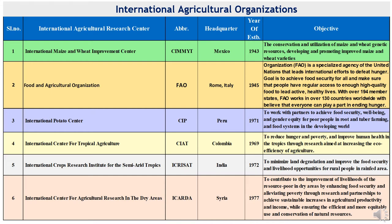Second is FAO — Food and Agriculture Organization — headquartered at Rome, Italy, established in 1945. The Food and Agriculture Organization of the United Nations is a specialized agency of the UN that leads international efforts to defeat hunger and improve nutrition and food security.